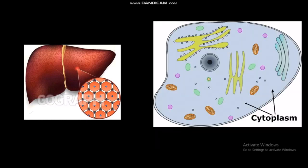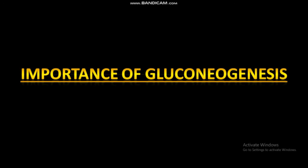To some extent it also occurs in the cells of the kidney, but mostly gluconeogenesis occurs in liver cells. About one kilogram of glucose is synthesized every day in liver cells. Inside the cell, the first step of gluconeogenesis occurs in the mitochondria, and the rest of the steps take place in the